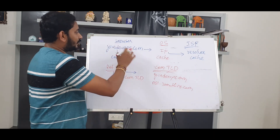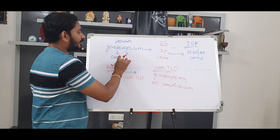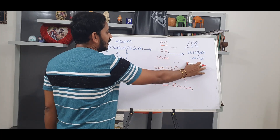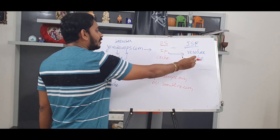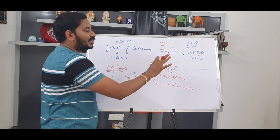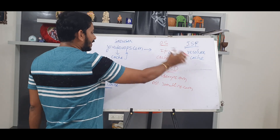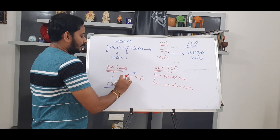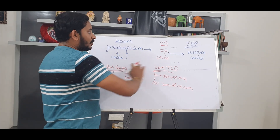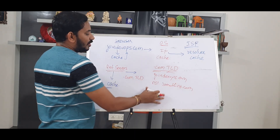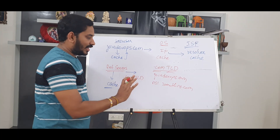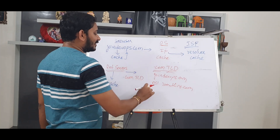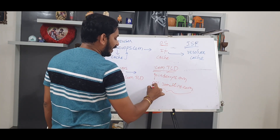So to summarize: we check the browser cache for joinDevOps.com, then check the OS cache, then check the ISP resolver cache. The ISP is responsible for the first DNS lookup. It checks the IP address via the root server. The domain is scanned — it is a top-level domain. The ISP approaches the .com TLD to get the nameserver information, then reaches the name server to get the IP address.